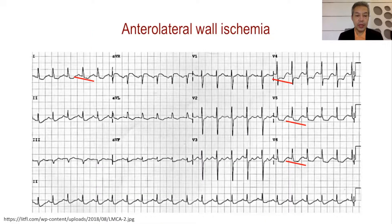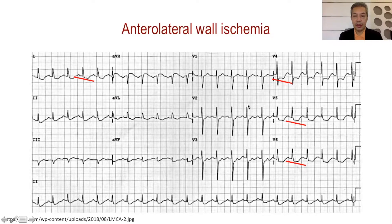In a patient who is tachycardic at 120 beats per minute, with an upright P wave in lead 2, this is sinus tachycardia. With ST segment elevation identified in leads 1, AVL, V5, V6, and V4, this patient has anterolateral wall ischemia.